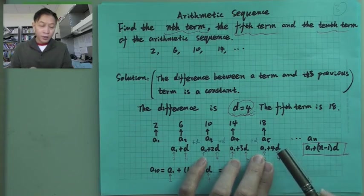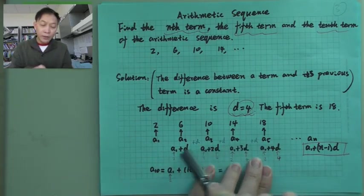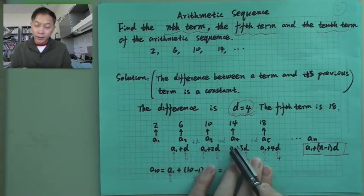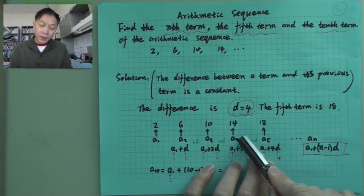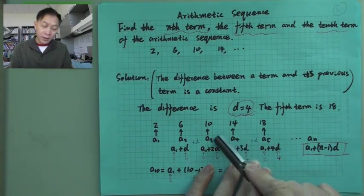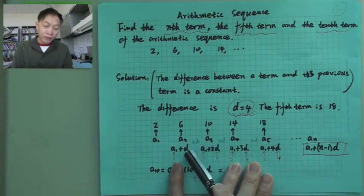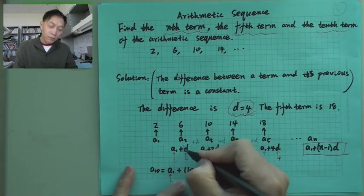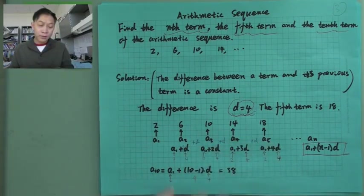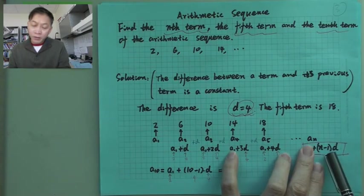What's the pattern here? You have A1 everywhere here. Everywhere. And then for the fifth term, here is 4. For the fourth term, here is 3. For the third term, here is 2. For the second term, here in front of D is 1.